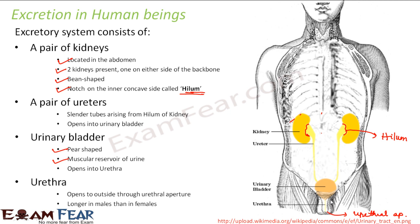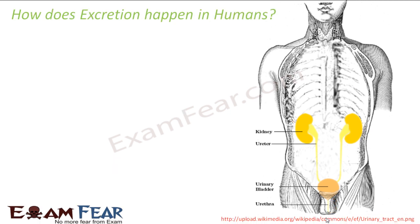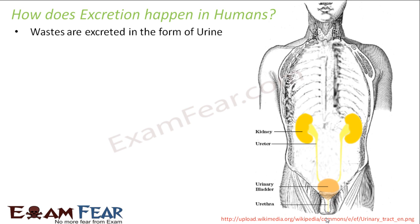The length of the urethra is longer in males than in females. In females it is very short in structure, and that is why the structure of the urethra looks very different in a male than in a female. This was a short description of the various organs of the excretory system.